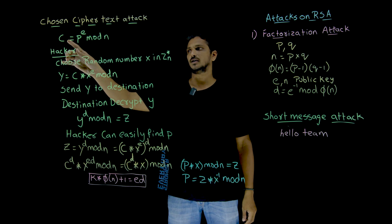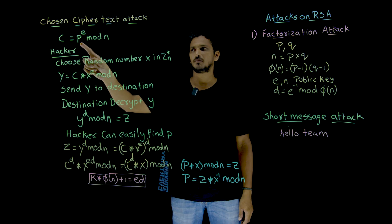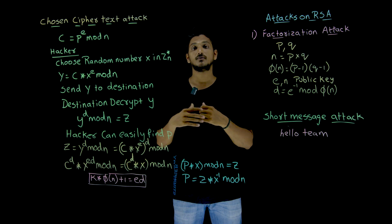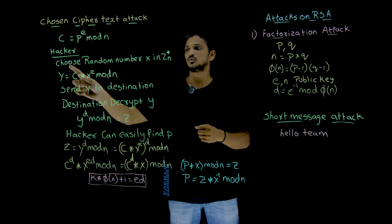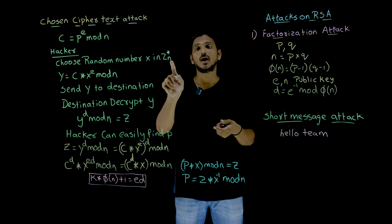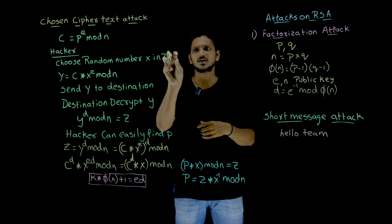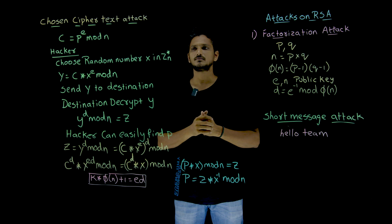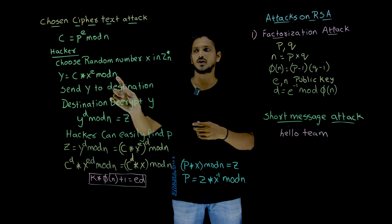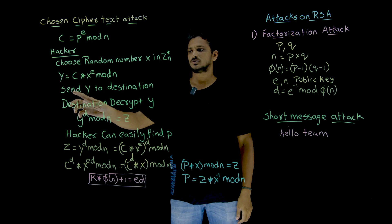How can we do that? Let us try to understand. What happens at the source? He is going to generate the ciphertext C, which is generated as plain text power E mod N. C is then sent over the network. If the hacker intercepts C, he chooses a random number X from ZN star. Since E and N are publicly known, he generates X from that set and computes Y equal to C multiplied by X power E mod N. Instead of sending C, he sends Y to the destination.